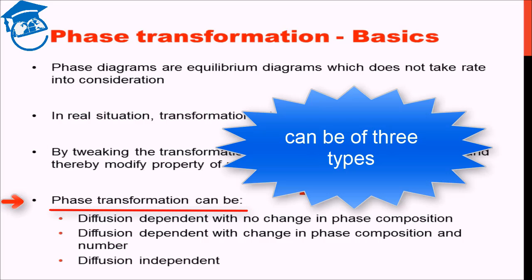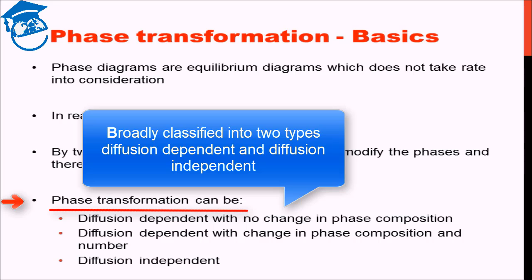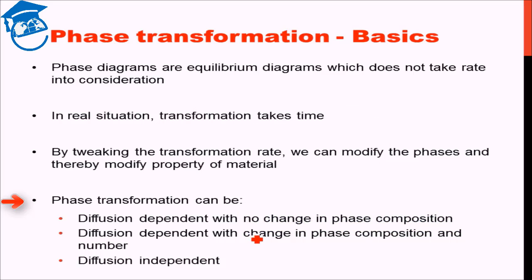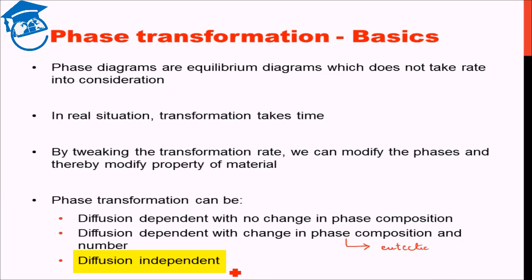Phase transformation can broadly be of two kinds: diffusion dependent or diffusion independent. In the diffusion dependent process, there can either be a change in the composition of the phase or no change in composition. An example of a diffusion dependent process with change in composition is the eutectic reaction. A diffusion independent process — one of the most important examples widely used in iron and steel — is martensitic transformation.